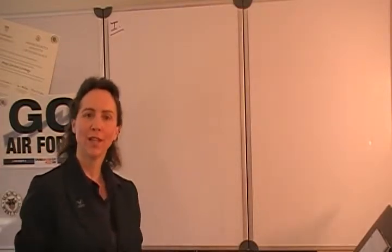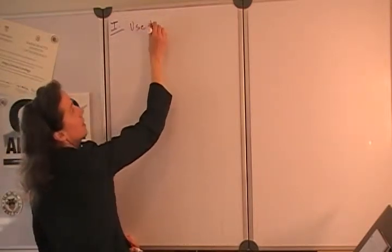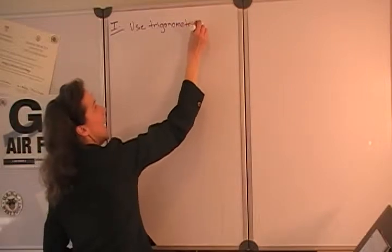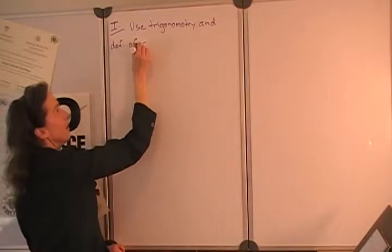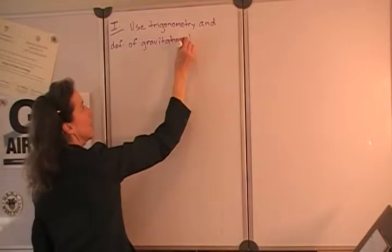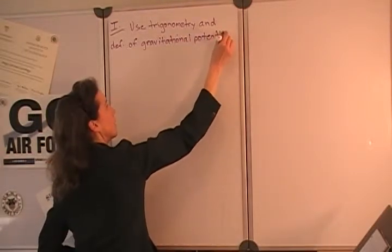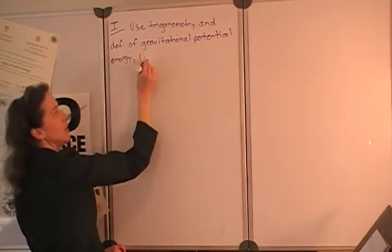I'm Dr. Courtney. This problem asks us to consider some basic relationships that will appear over and over again in physics problems to come. We're going to use trigonometry and the definition of gravitational potential energy, which we'll call capital U_G.